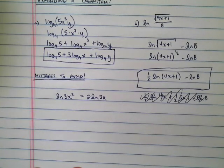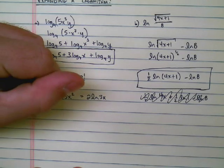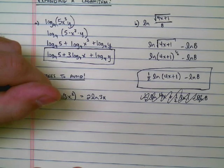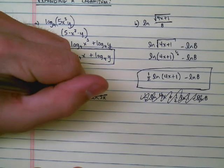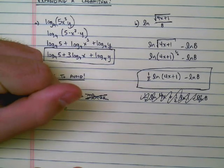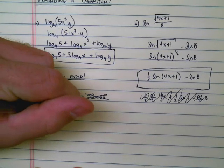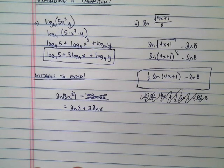See, the mistake that we made is this. You actually have 3x squared and you can see that it's 3 times x squared. You're not squaring the 3, you're only squaring the x. So really, it's not this, but it's the natural log of 3 plus 2 times the natural log of x.